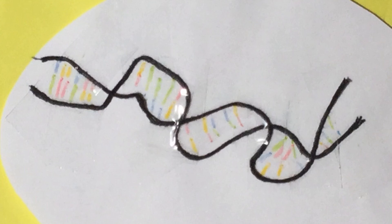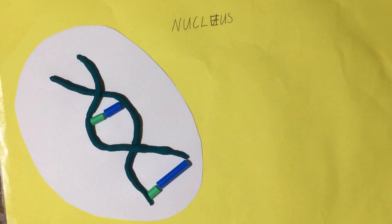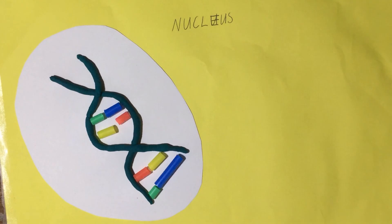Within this strand of DNA are different sections known as genes, which contain the instructions to make proteins. The double helix structure of DNA is made up of a sugar phosphate backbone and various base pairs.